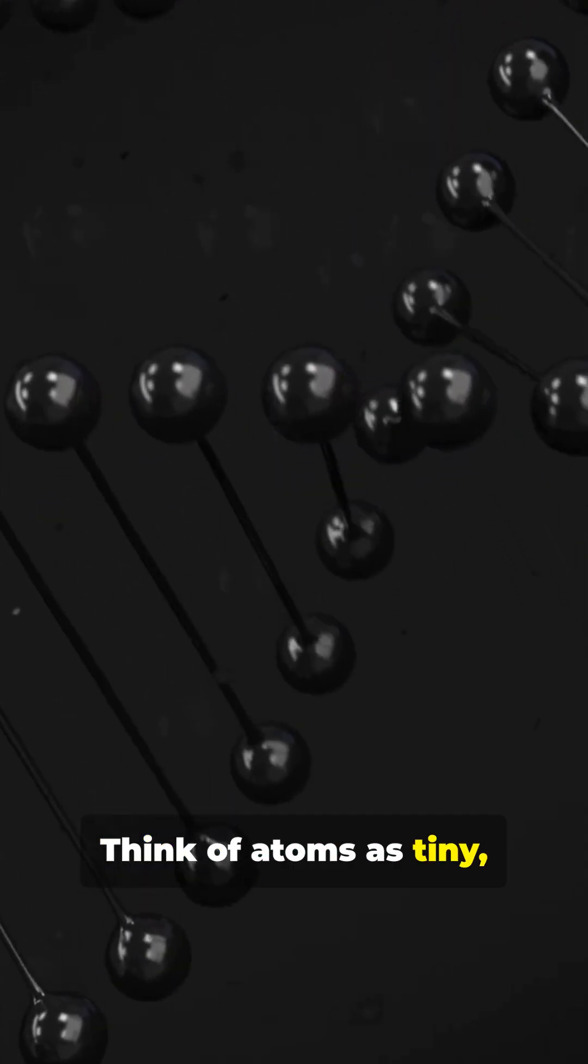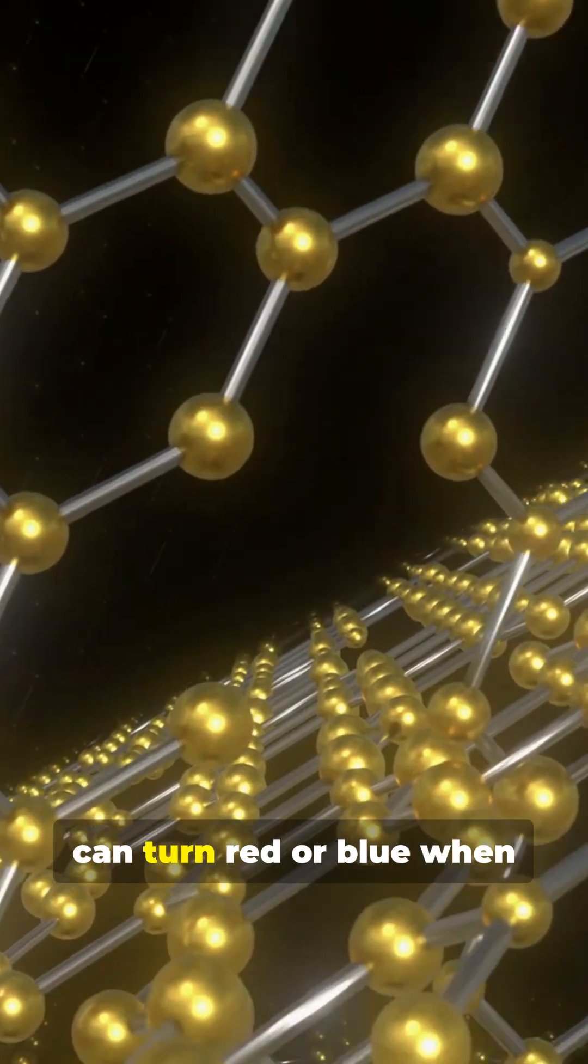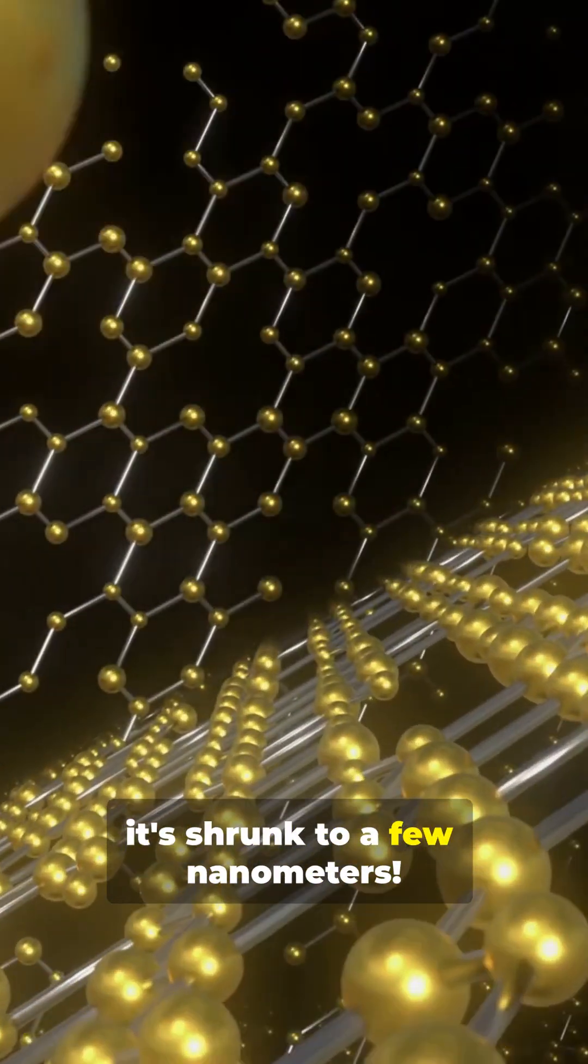Think of atoms as tiny, specialized Lego bricks. At this scale, materials behave bizarrely. Gold, which is shiny and yellow, can turn red or blue when it's shrunk to a few nanometers.